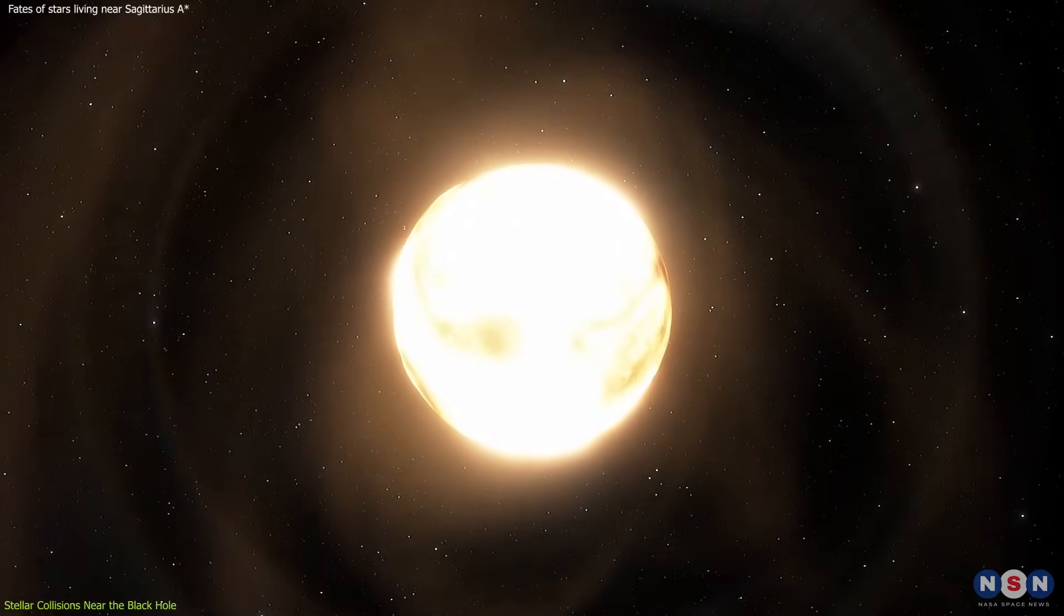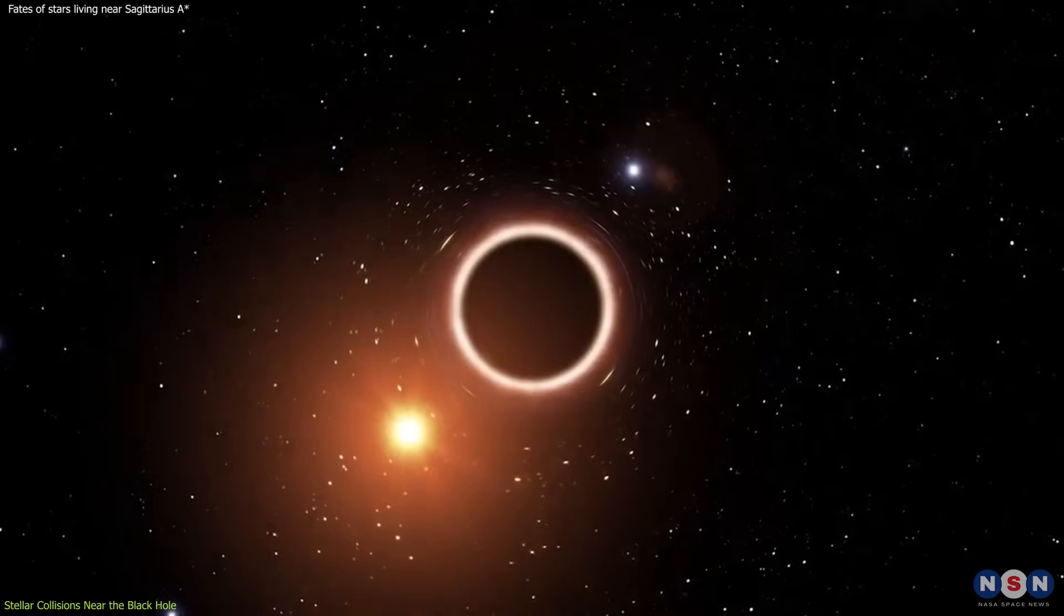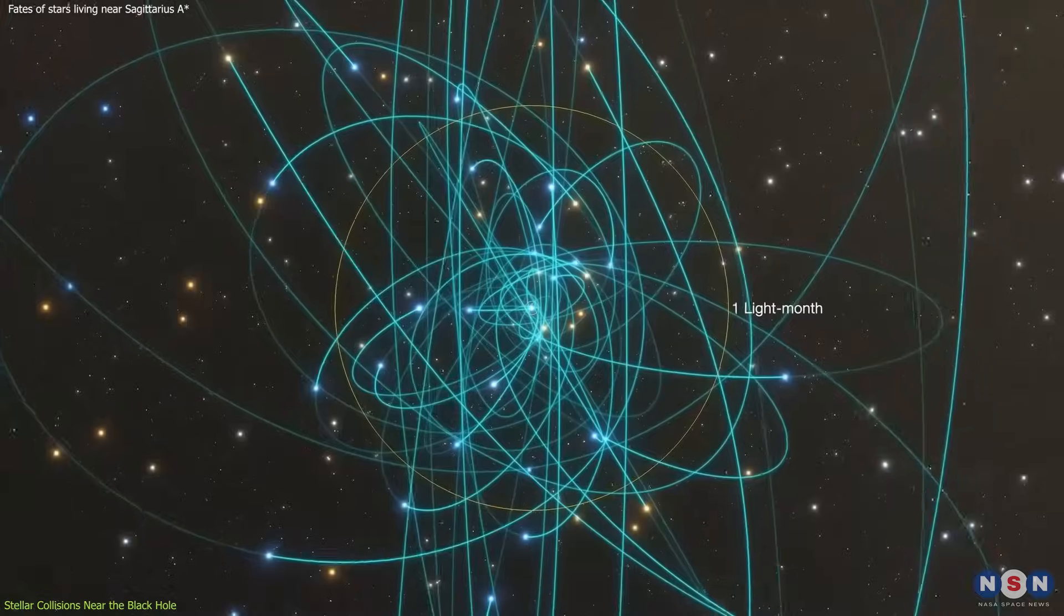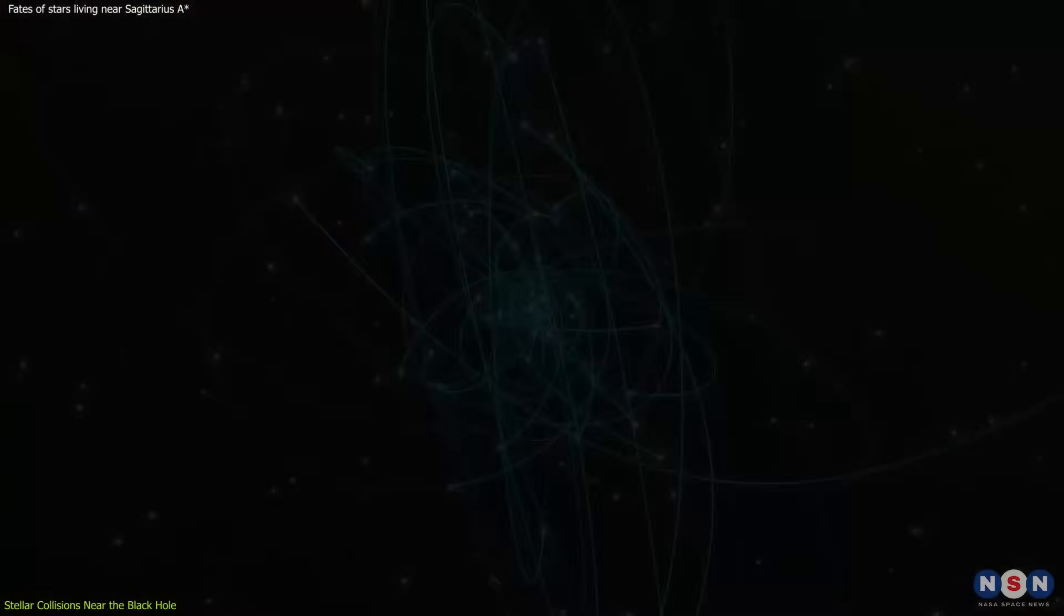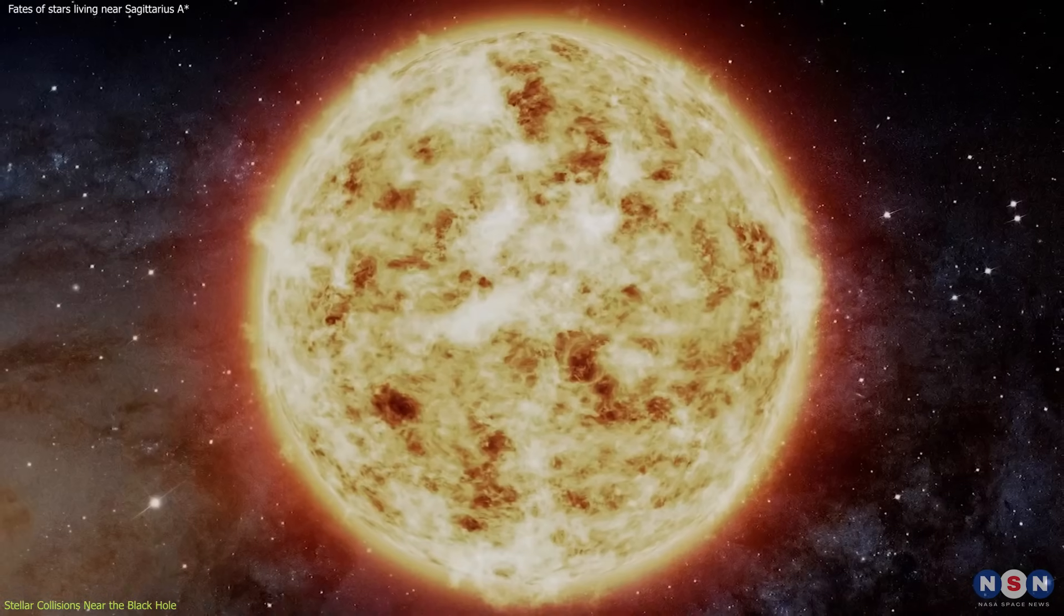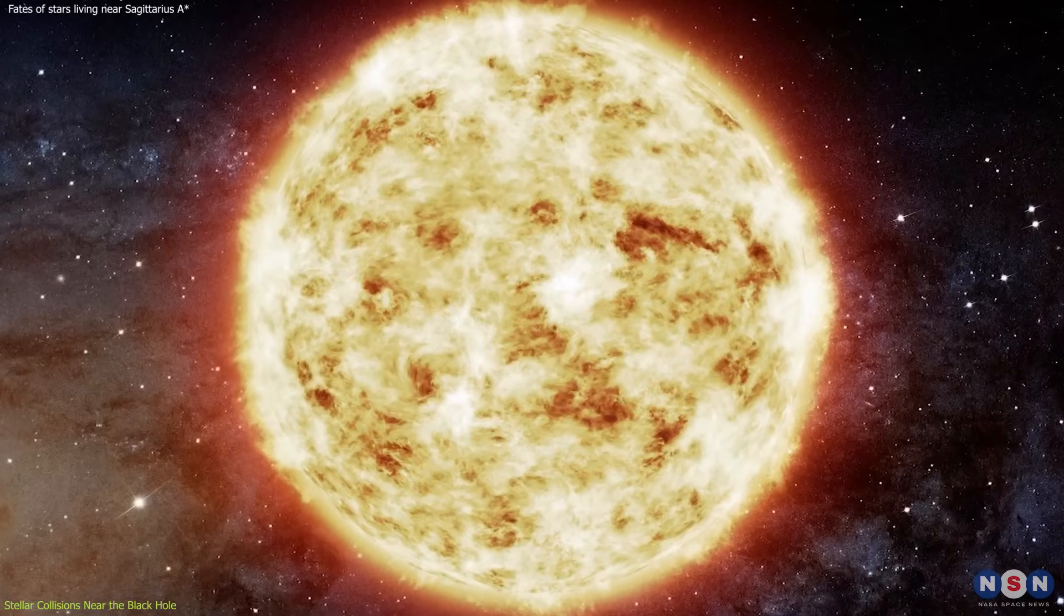In addition to the stripped stars, there are also instances where stars merge to form more massive entities. This is more common in areas slightly farther from Sagittarius A star, where the stars move at relatively slower speeds. These mergers result in stars that are rejuvenated in appearance, boasting a fresh supply of hydrogen fuel and shining brightly, as if they were much younger.